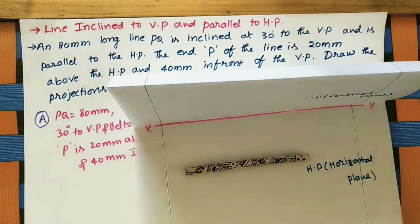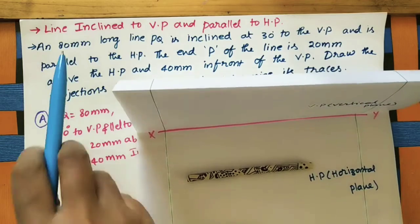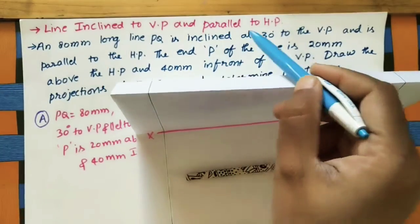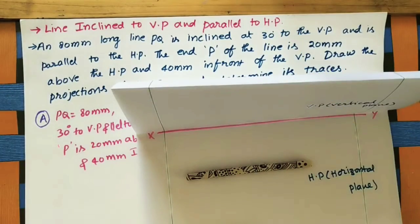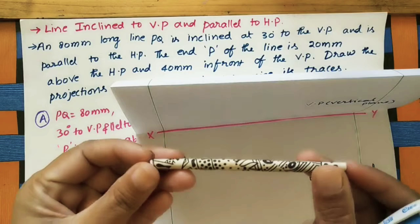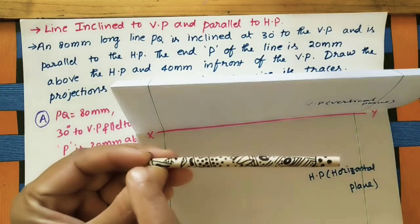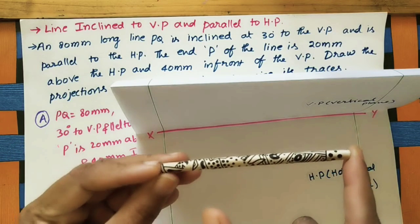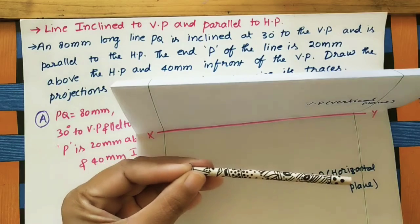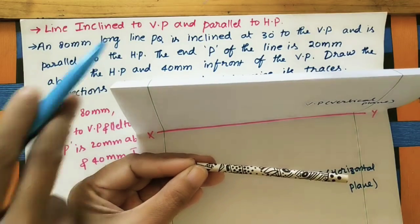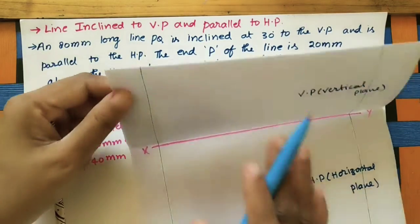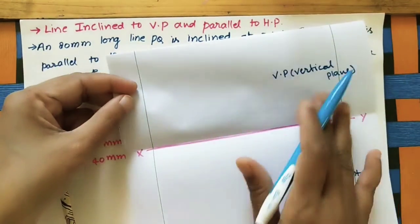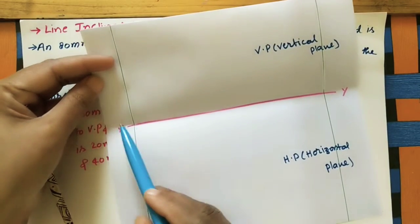Hi friends, welcome to my channel. Let us discuss how to draw the projections of a given line when the line is inclined to VP and parallel to HP. Here I am taking line PQ — this end is P, this end is Q. This line is inclined to the vertical plane.